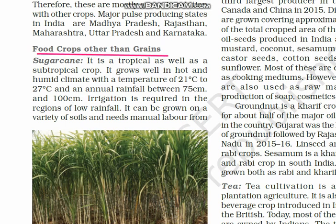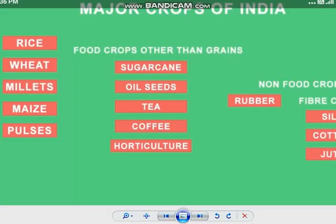These are food crops which we use but they are not grain-shaped. We will discuss this through a tabular form so that it is easy for you to understand, learn and remember. Today we will cover sugarcane, oilseeds, tea, coffee and horticulture, which comes under the subheading food crops other than grains.